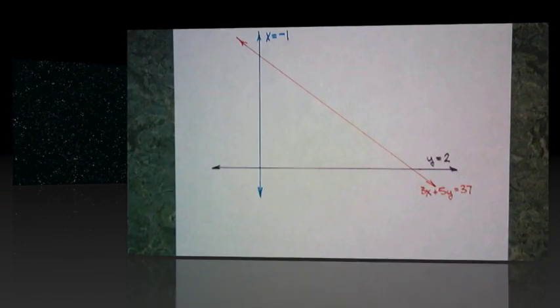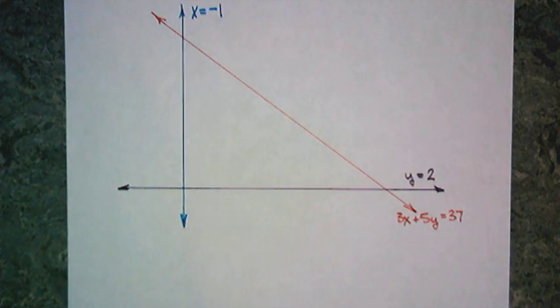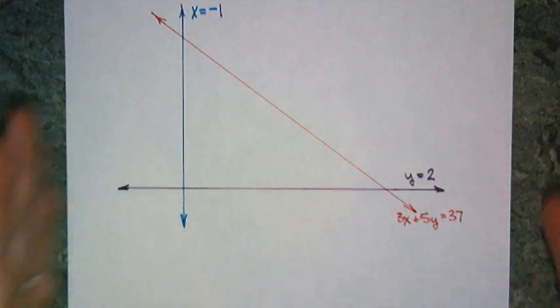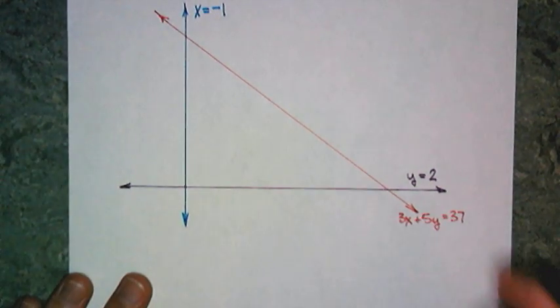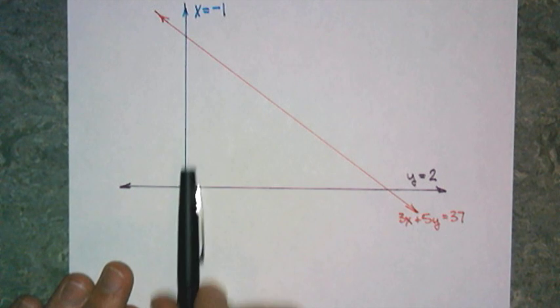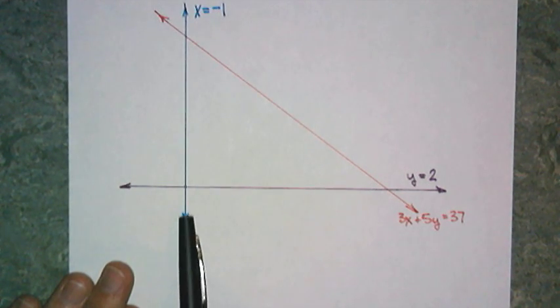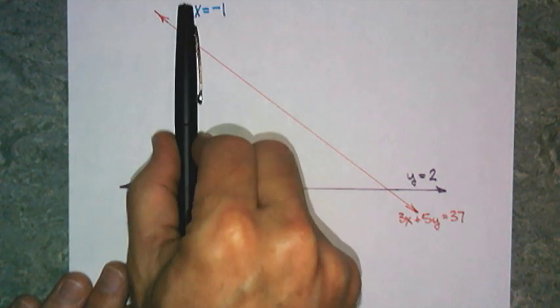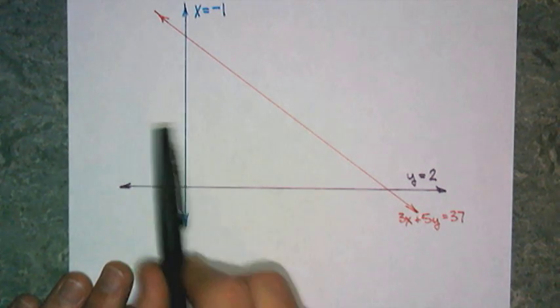All right. First thing I want to start with is a sketch. And here we go. All right, x equals negative 1 is a vertical line where all the x ordinates are negative 1, and all the y's can be whatever.